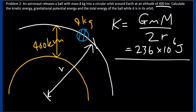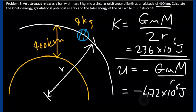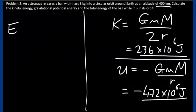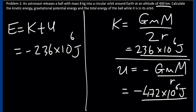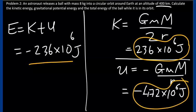The gravitational potential energy is twice the kinetic energy with a negative sign, giving minus 472 times 10 to the 6 joules. The total mechanical energy is the sum of kinetic and potential energy, equal to minus 236 times 10 to the 6 joules. That solves the problem. Thank you for watching.